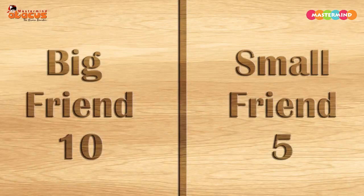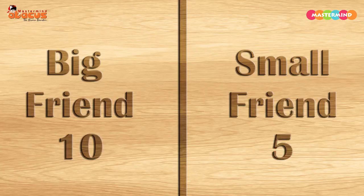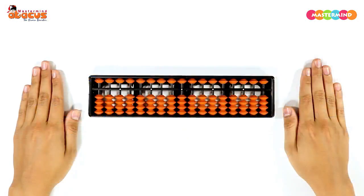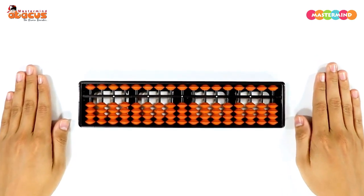Let me introduce you friends in abacus. In abacus we have two friends: the first one is big friend and the second one is small friend. Now let us understand the concept of big friend. We will understand this by the help of an example.